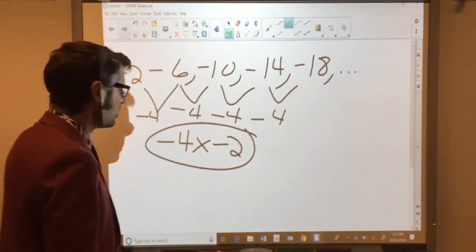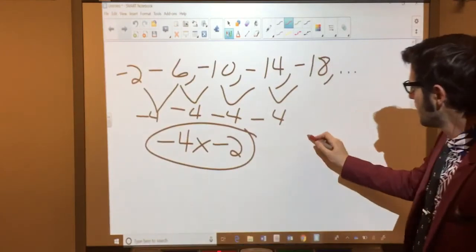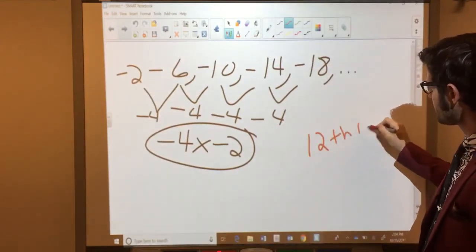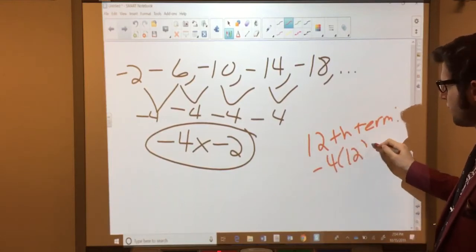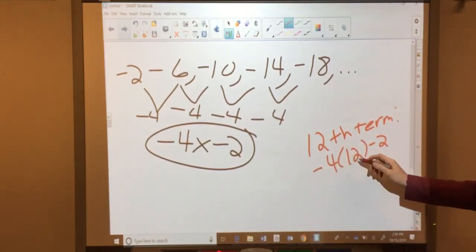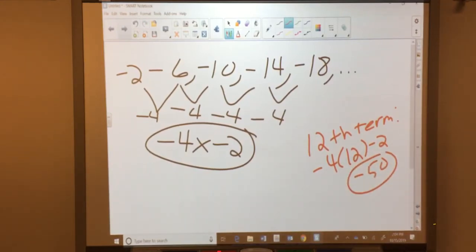And, for instance, if we wanted the 12th term here, to find the 12th term, we would take negative 4 times 12 minus 2. That's negative 48 minus 2 is negative 50. That would be the 12th term in this sequence.